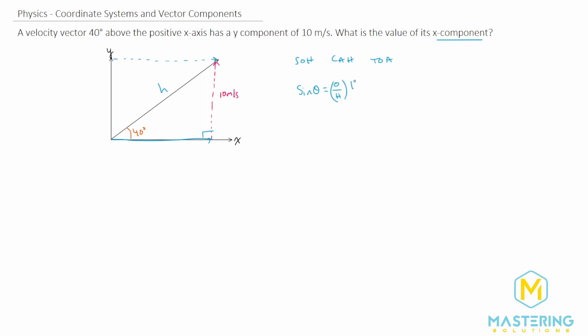So we need to multiply both sides by h. We're trying to isolate h. So now we have opposite is equal to h sine theta, and now we'll divide both sides by sine of the angle. So now that leaves us down here with h is equal to opposite divided by sine of theta.